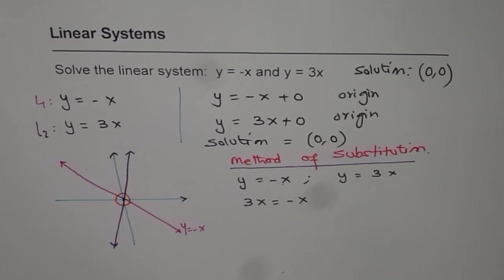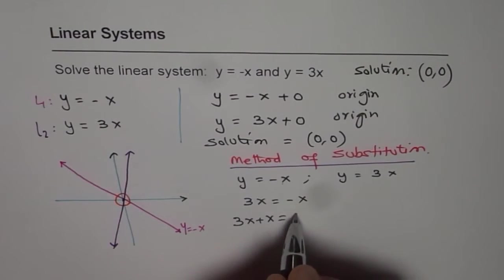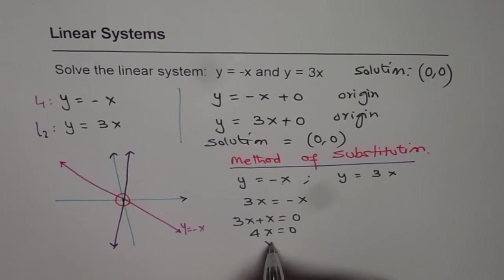Now, what is the solution for this? We can bring x to the left side. So we have 3x plus x equals 0 or 4x equals 0 and solve for x. x equals 0 over 4 which gives us 0 as our answer for x value.